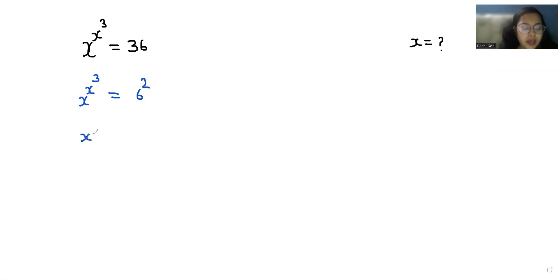Now x^(x^3), I am going to multiply with power 3 both sides. So 6 squared whole power 3. Now according to exponent rule...